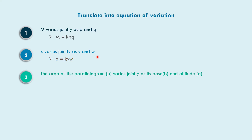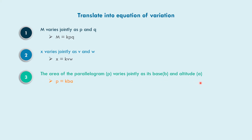In example number three, the area of a parallelogram p varies jointly as its base b and altitude a. So p is equal to k times b times a.